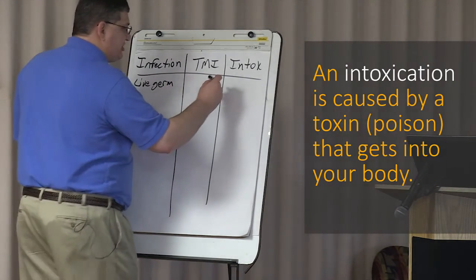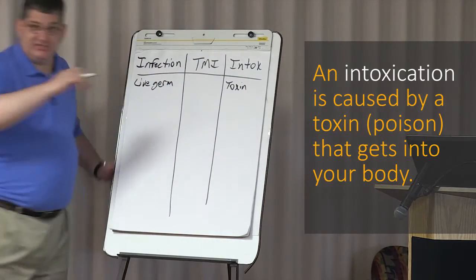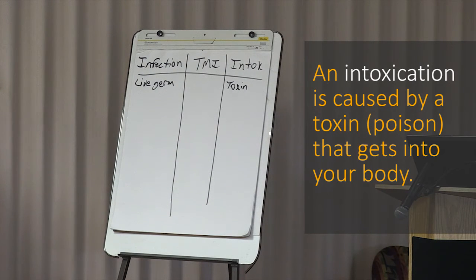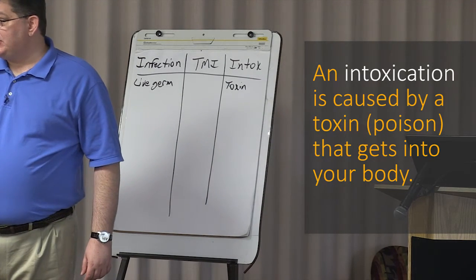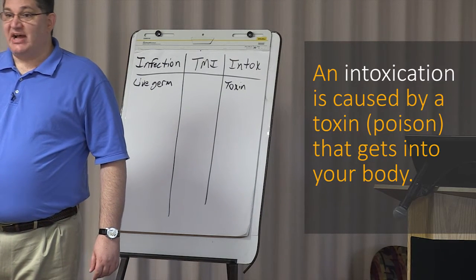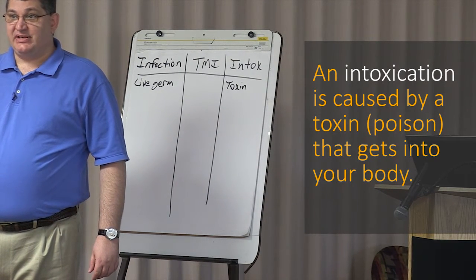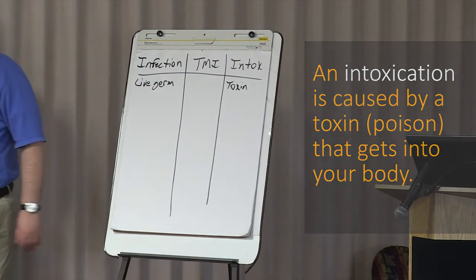An intoxication is caused by a toxin or poison that gets into your body. This can be a toxin from a man-made substance, from a bacteria, or from some bad fish or something. There are lots of toxins that we can get, but here we're going to focus on bacterial toxins.